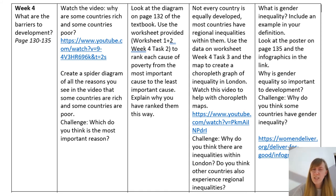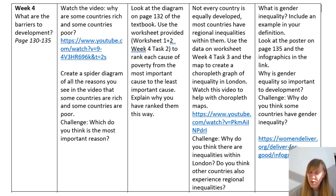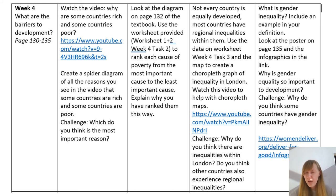Task three is looking at regional differences, and you're going to make your own choropleth map. We looked at choropleth maps when we examined GNI a couple of weeks ago — the different colours showed how much or how little a country's GNI was — and you're going to do the same thing. There's a video to help if you're not sure where to start, and the worksheet has all the data and explanation you need. If you find that straightforward, the challenge is to explain why London has inequalities and whether other countries experience a similar level of regional inequality.